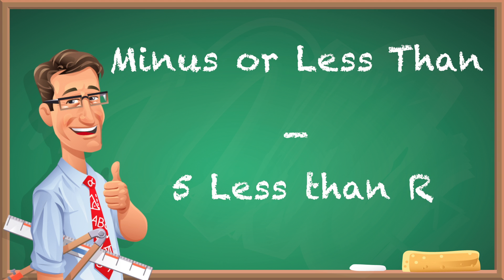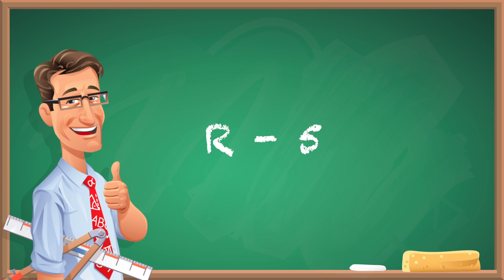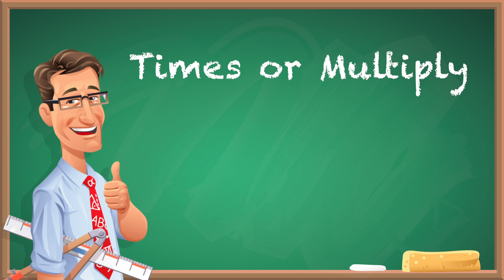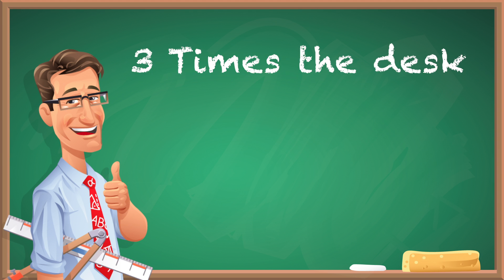If you see the words 'times' or 'multiply,' you're going to be multiplying. For example, 'three times d' means 3 × d, or 3 • d, or even something as simple as 3d.